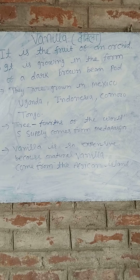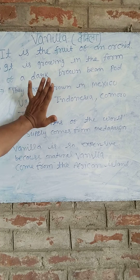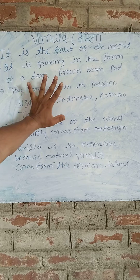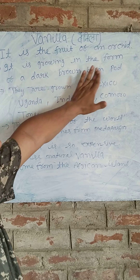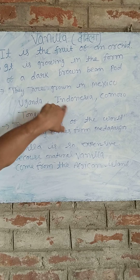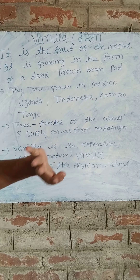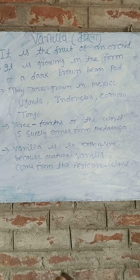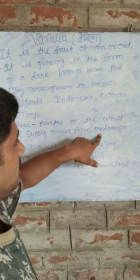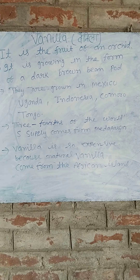Vanilla is the fruit of an orchid. It grows in the form of a dark brown bean pod. Vanilla is grown in Mexico, Uganda, Indonesia, Comoros, and Tonga. The most renowned vanilla comes from Madagascar.